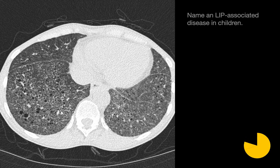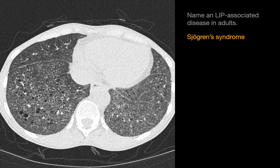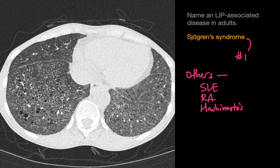Name an LIP-associated disease in children. The answer we're looking for here is HIV. Name an LIP-associated disease in adults. The most common LIP-associated disease in adults would probably be Sjögren's syndrome. However, a number of other autoimmune disorders are associated with LIP — things like lupus, rheumatoid, or Hashimoto's.